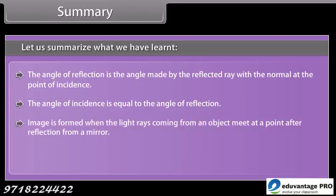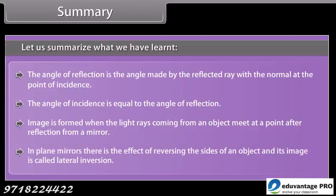Image is formed when the light rays coming from an object meet at a point after reflection from a mirror. In plane mirrors, there is the effect of reversing the sides of an object and its image, called lateral inversion.